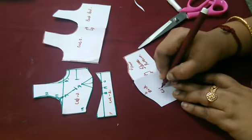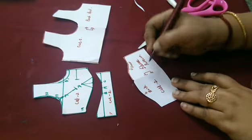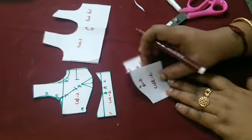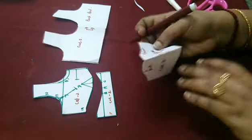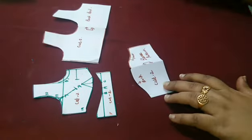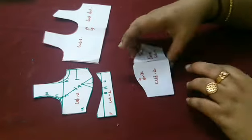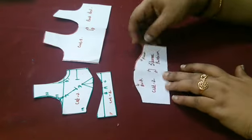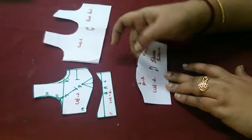Cut two pieces on fold. It should be on fold - you have to cut two pieces. This is going to be the front part of the sleeve and this is the back part.